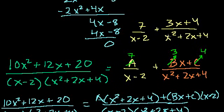So the partial fraction decomposition is 7 over (x minus 2) plus (3x plus 4) over (x squared plus 2x plus 4). That was a pretty involved problem. As you can see, partial fraction decomposition becomes a lot more complicated with higher degree denominators, but hopefully you found it useful.